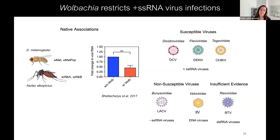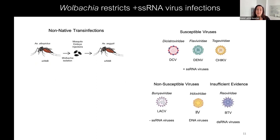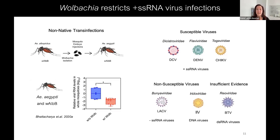In my lab we've shown that this inhibition can be detected very early on as a change in viral RNA genome. When an insect cell or the whole insect has Wolbachia present, we see less virus genome replication — it limits the ability of the virus to initiate genome replication in the earliest stages of the viral cell cycle. We also see the same type of protection in non-native trans-infections, where WLB from Aedes albopictus can be injected into Aedes aegypti, and viral RNA in those mosquitoes is reduced compared to uninfected mosquitoes.